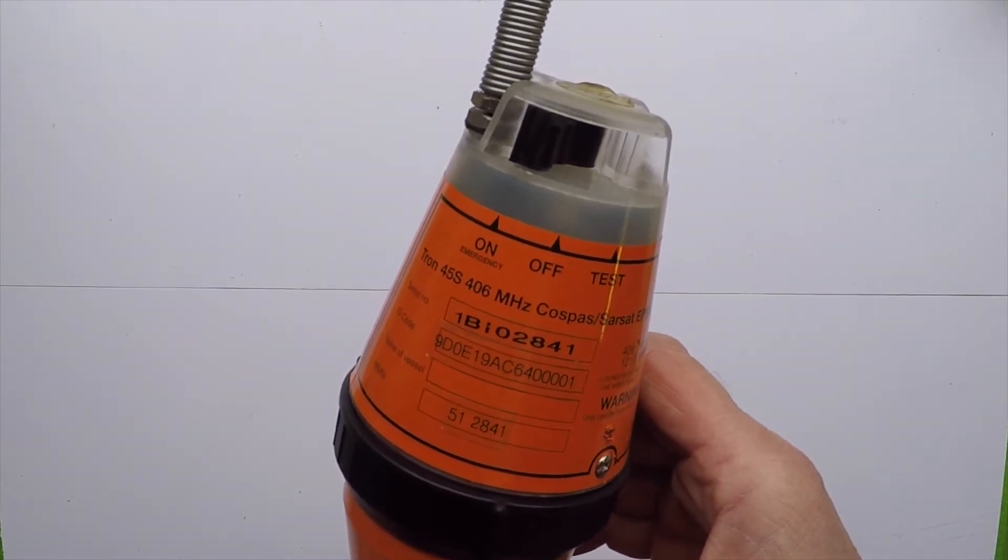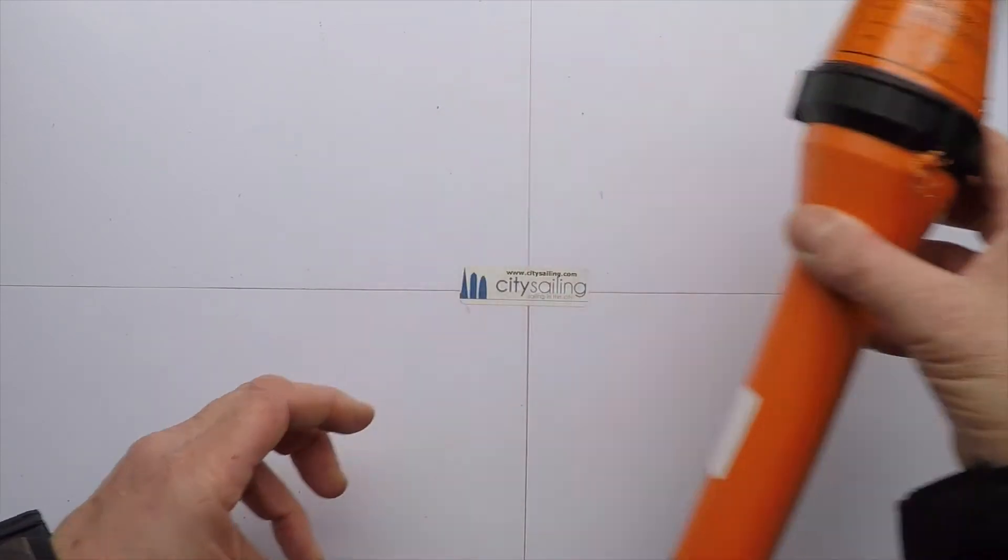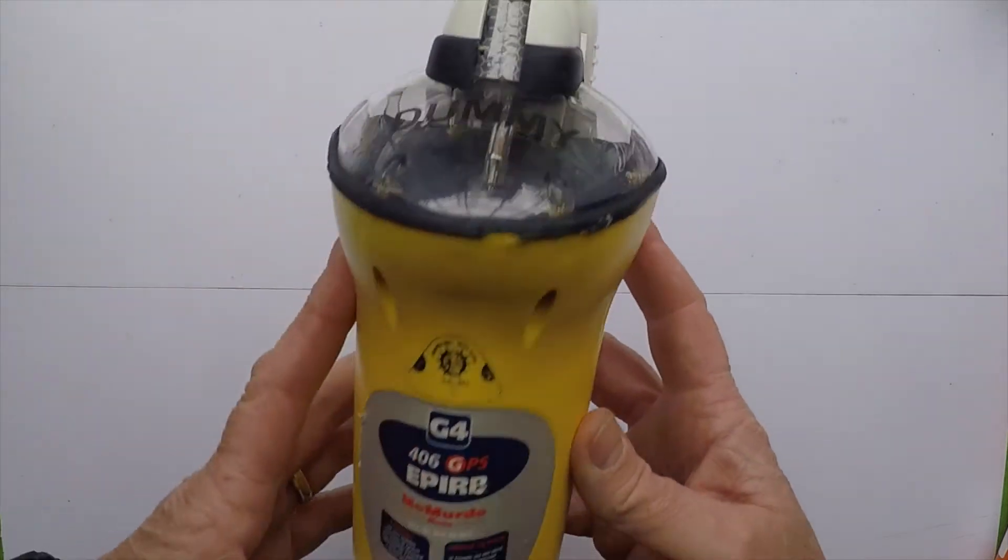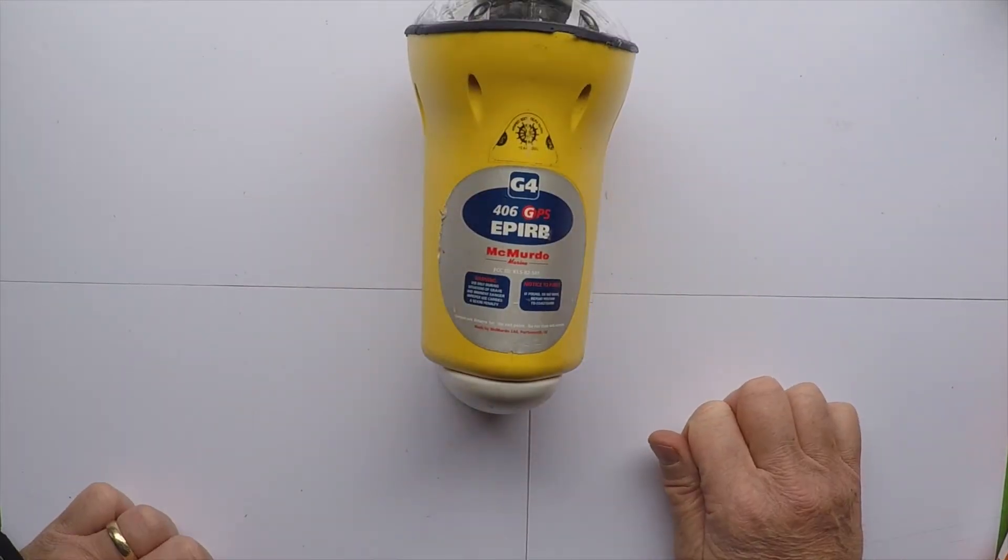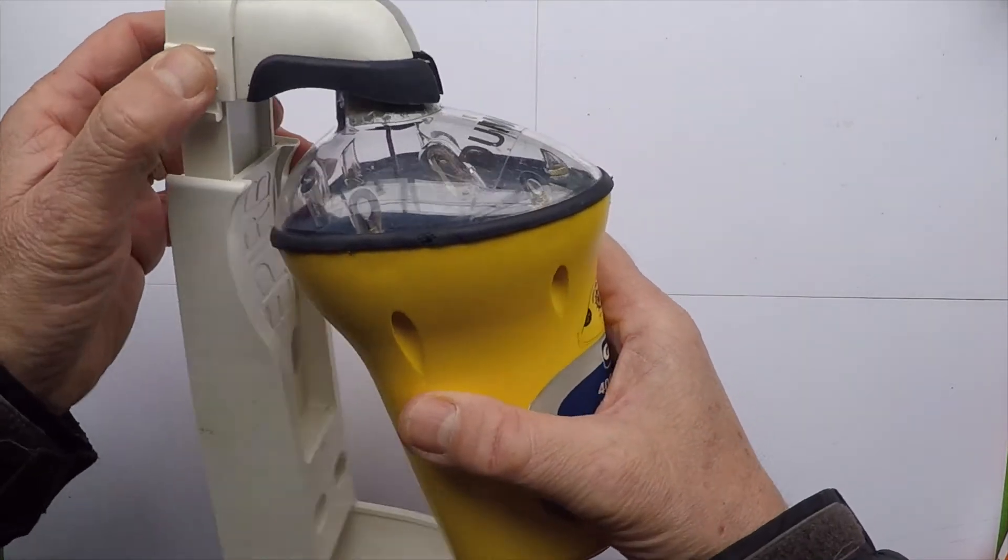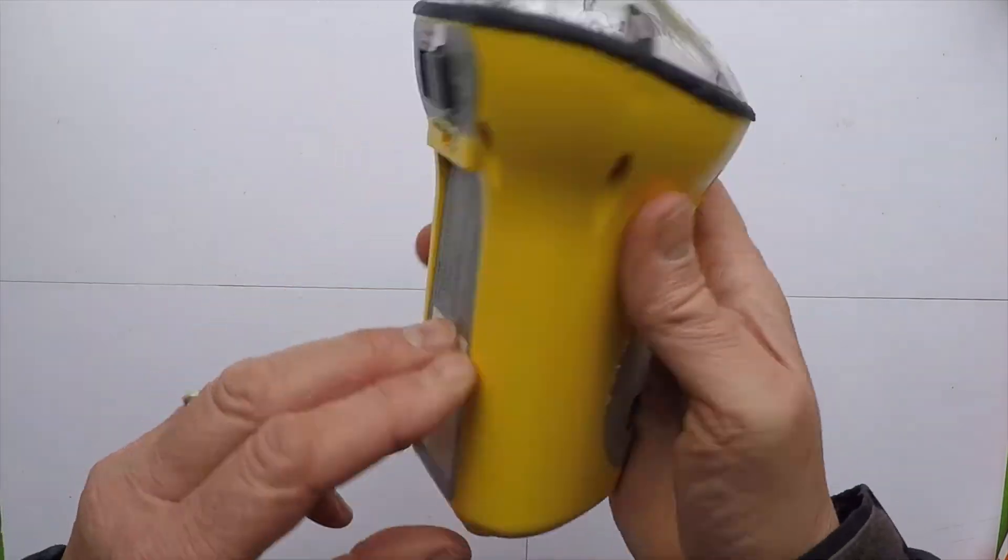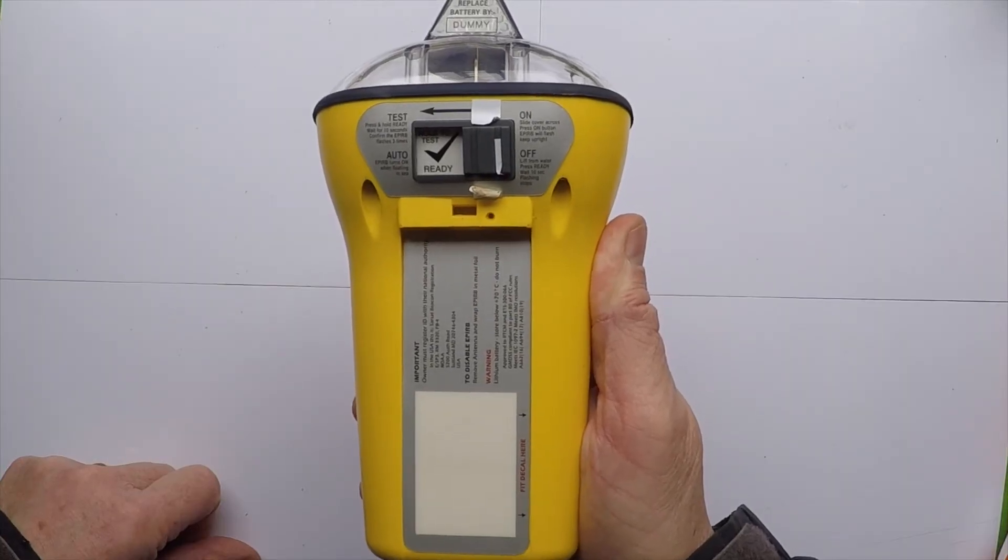This is a Dotron. I want to show you another one - this is a dummy one, this is a McMurdo 406 GPS EPIRB, so it locates your position with GPS. For this one, take it off, take it out of its housing, and to set this one off just push it across and it's on.